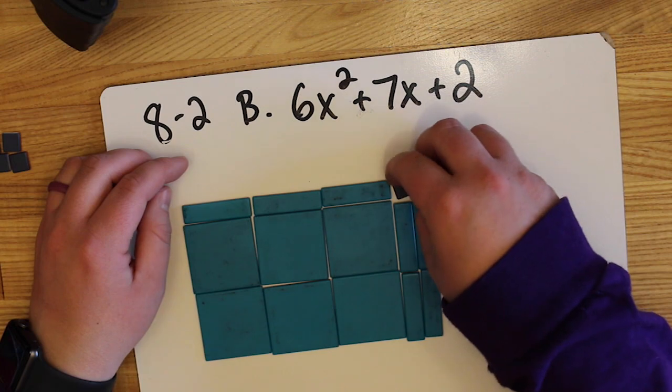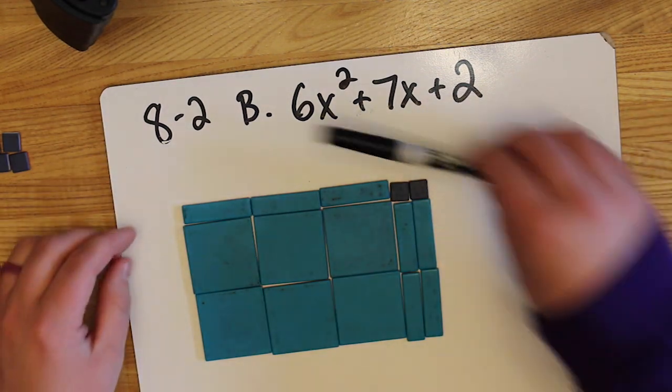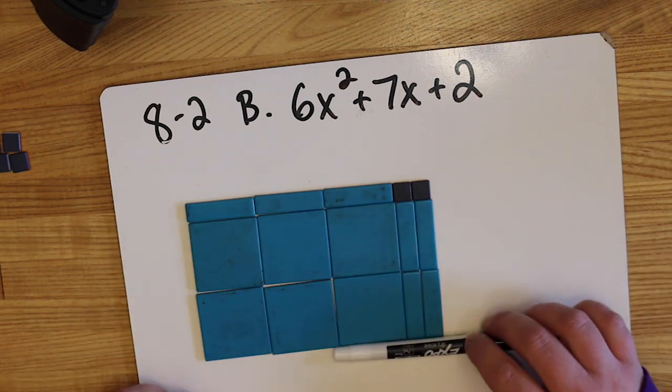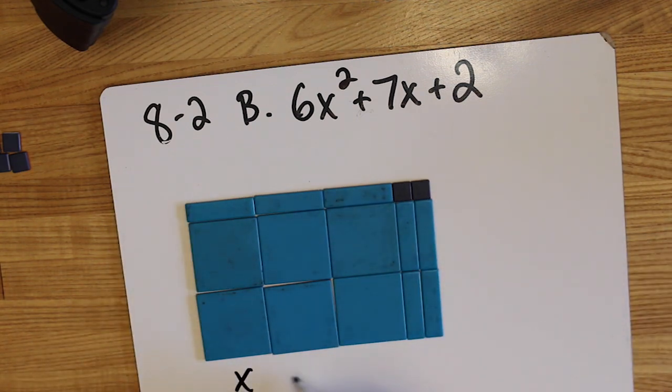It can take a few tries to get the algebra tiles to work out perfectly. In this case, it does. So the next step is we're going to write the perimeter, which will be our product. And that's equivalent to the sum that we started with.